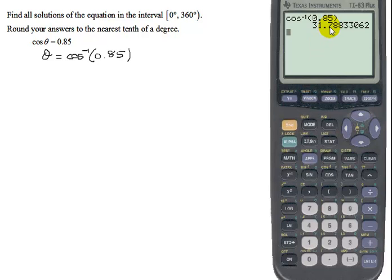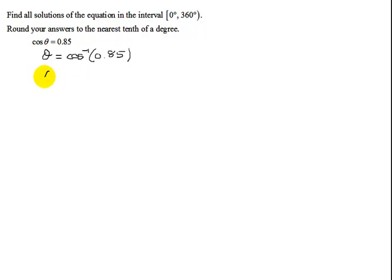I need to round it to the nearest tenth of a degree, which is this position. Therefore that 8 is going to round that 7 up, so I'm going to get 31.8 degrees. So theta equals 31.8 degrees rounded to the nearest tenth.